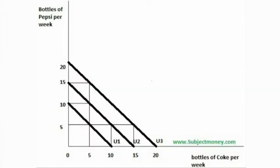For a perfect substitute, the marginal rate of substitution of the indifference curve is 1, making it a straight line. The straight line indifference curve map reflects the perfect substitution of the goods offered.